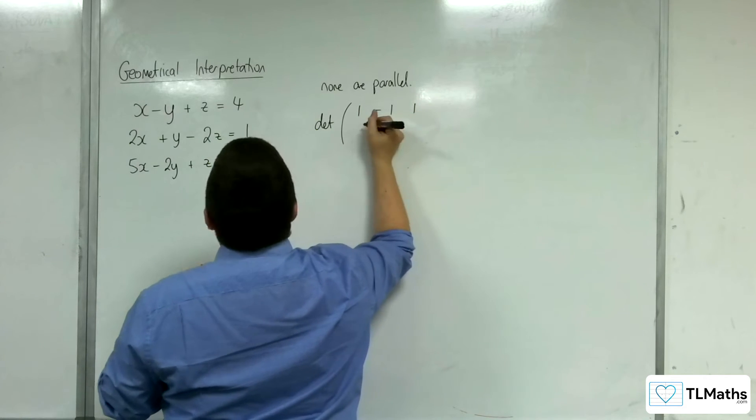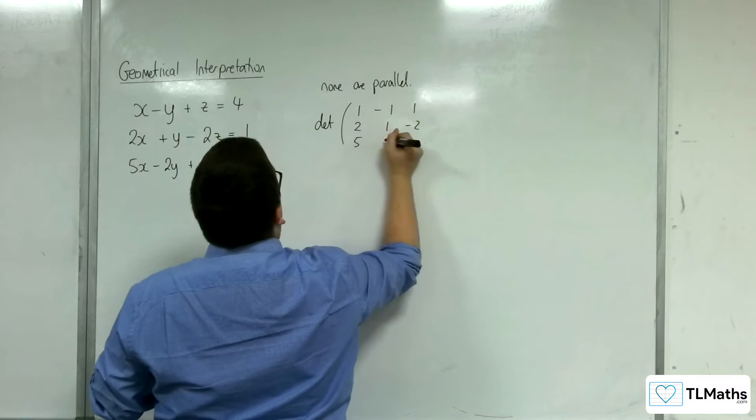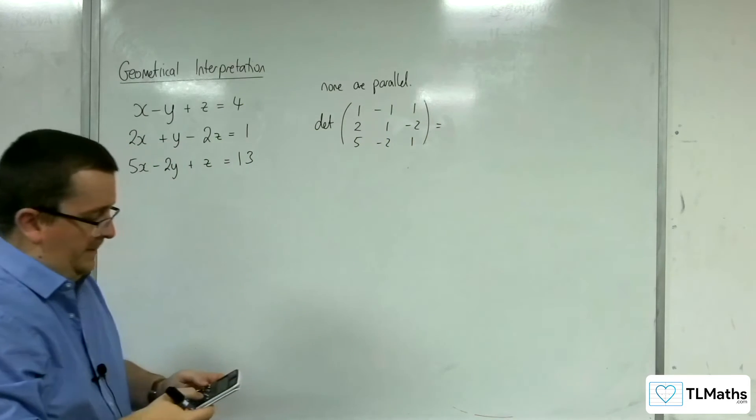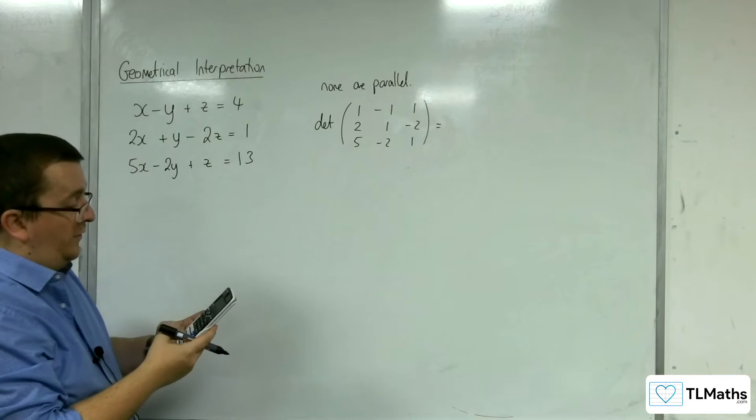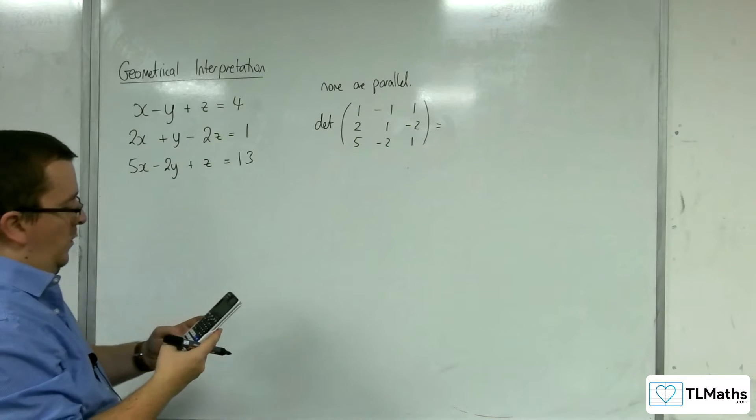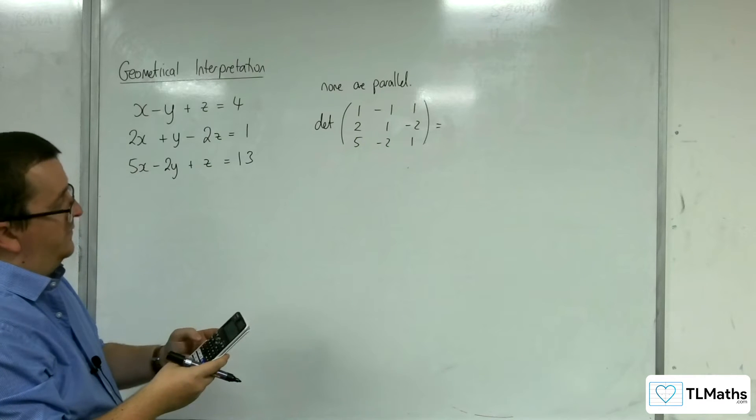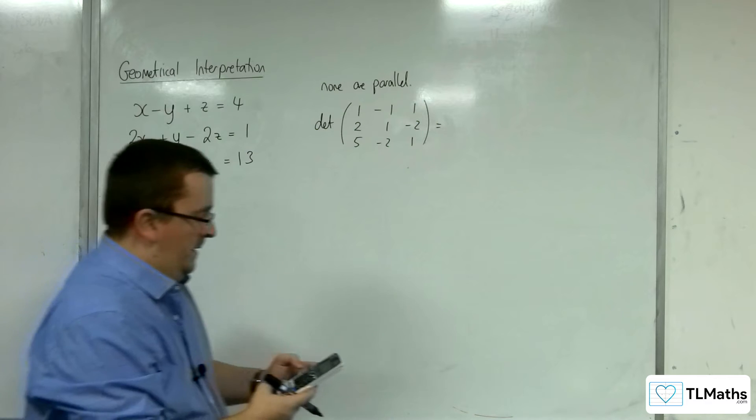1, minus 1, 1. 2, 1, minus 2. 5, minus 2, 1. I'm going to go to the matrix calculator on my calculator. So matrix A, three rows, three columns. 1, negative 1, 1. 2, 1, negative 2. 5, negative 2, 1.